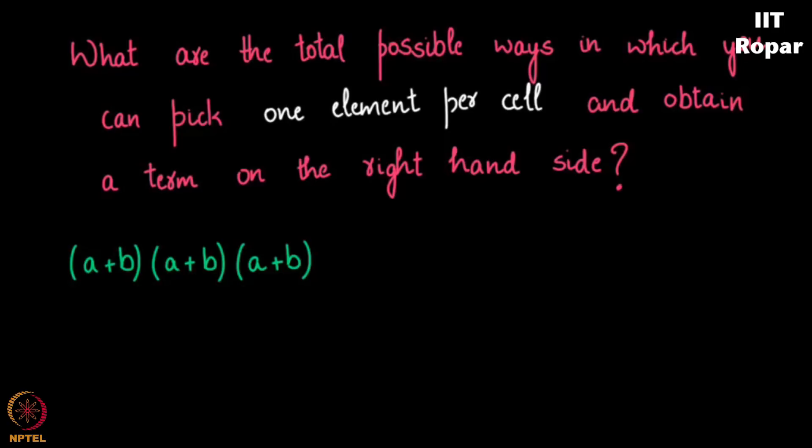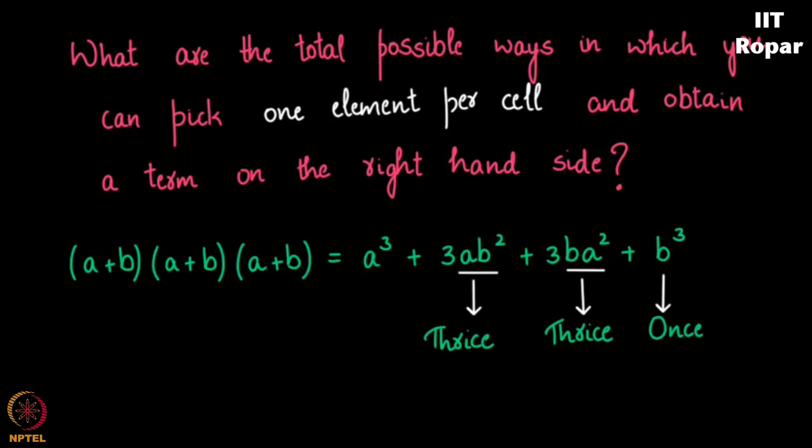If you continue doing it, it is a cube plus 3ab square plus 3ba square plus b cube. You can verify this. Your ab square comes thrice, your ba square comes thrice, b cube comes once, a cube comes once.